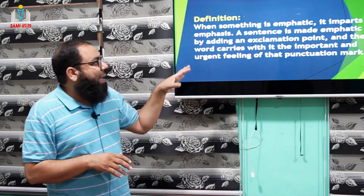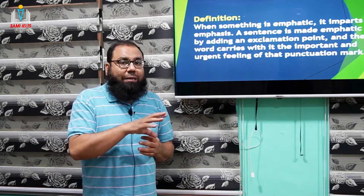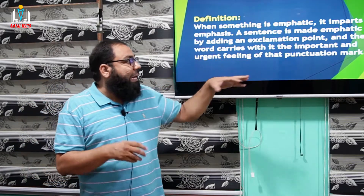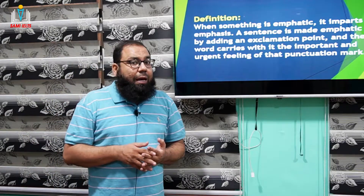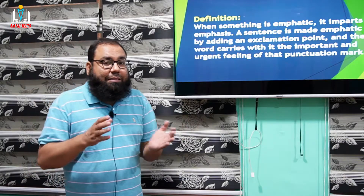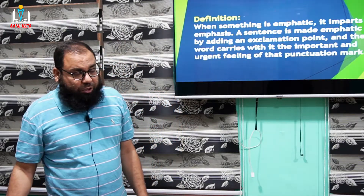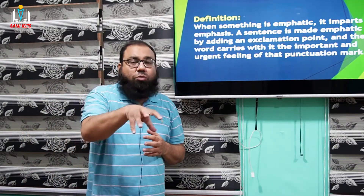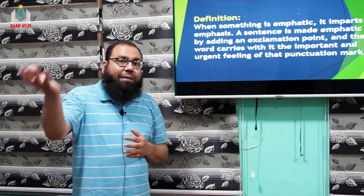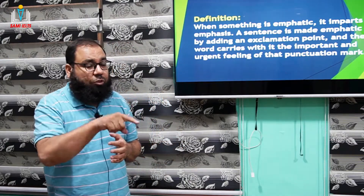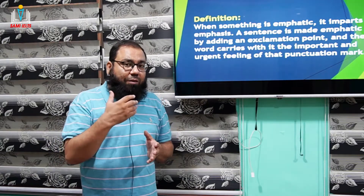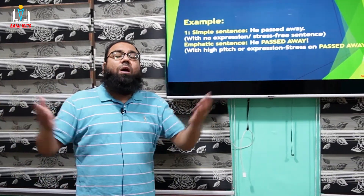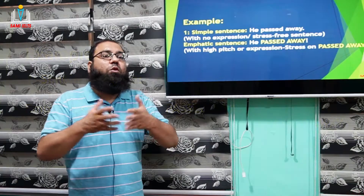A sentence is made emphatic by adding an exclamation point. When you are writing an emphatic sentence, at the end we always put a sign of exclamation, and the word carries the important and urgent feeling of that punctuation mark. Whenever you want to apply extra stress or extra pressure on a particular area of the sentence — to bring the reader's attention — we capitalize that area. It might be a single word, two words, or even a full sentence.